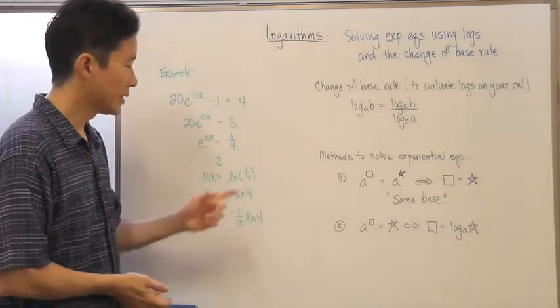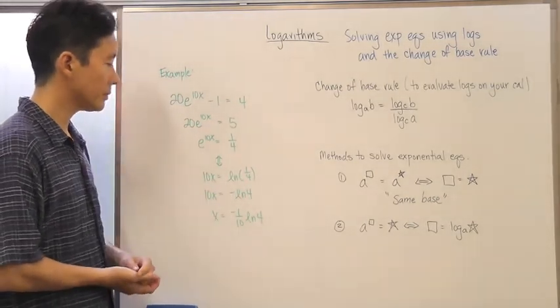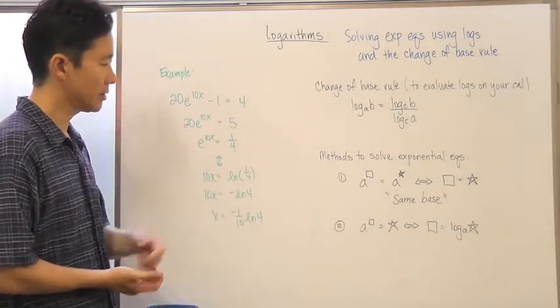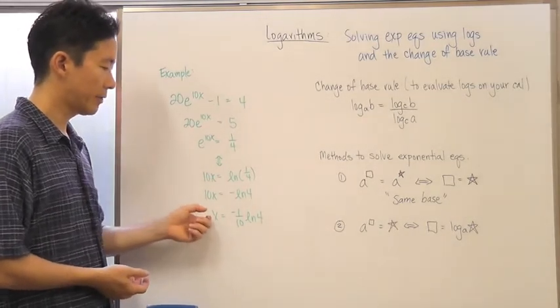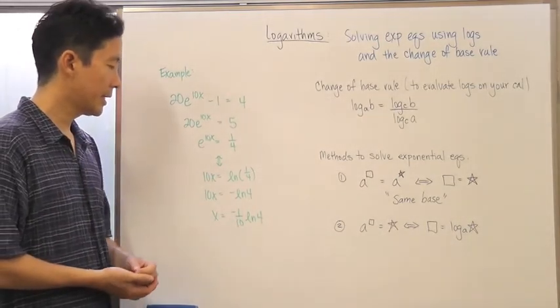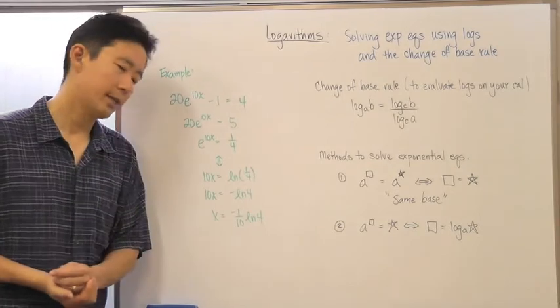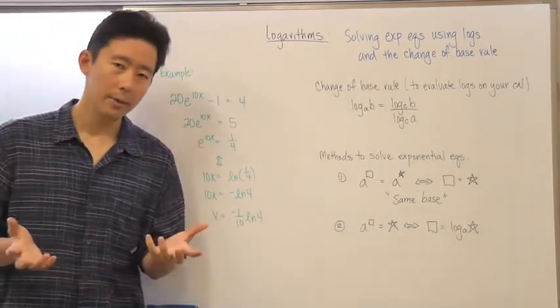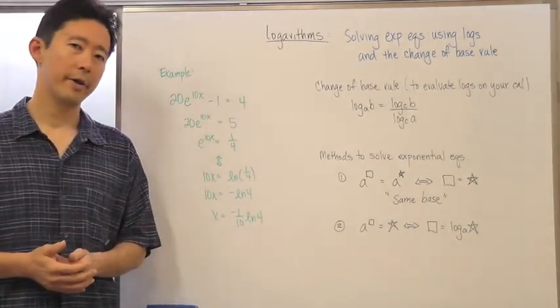There's a lot of different ways that you can prove that. We have the negative natural log of 4, and then after that we just divide by 10 and you come up with negative 1/10 natural log of 4, which is probably the simplest form of your answer.